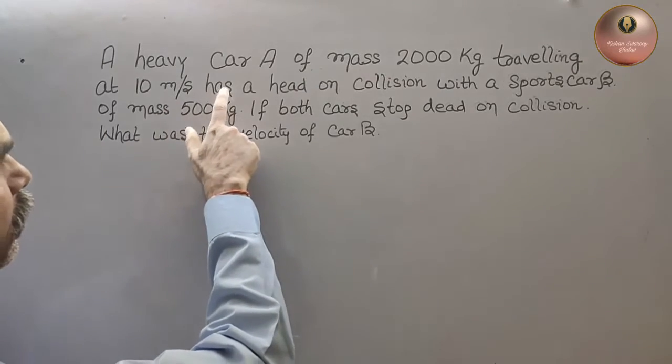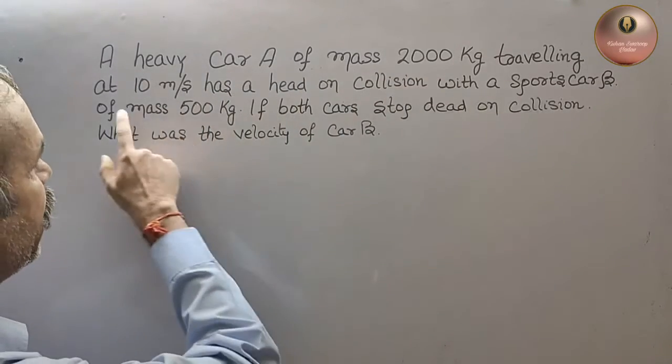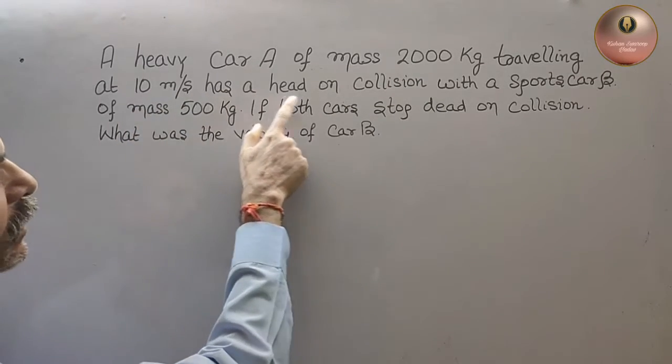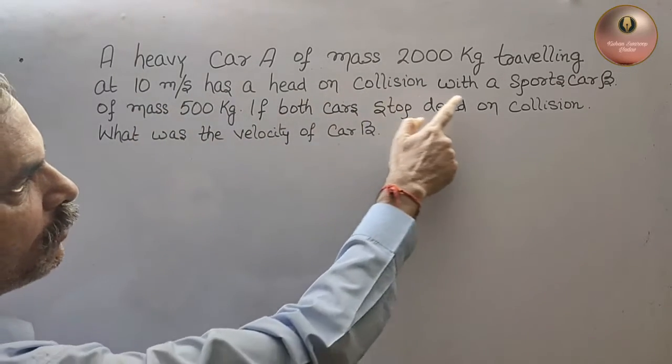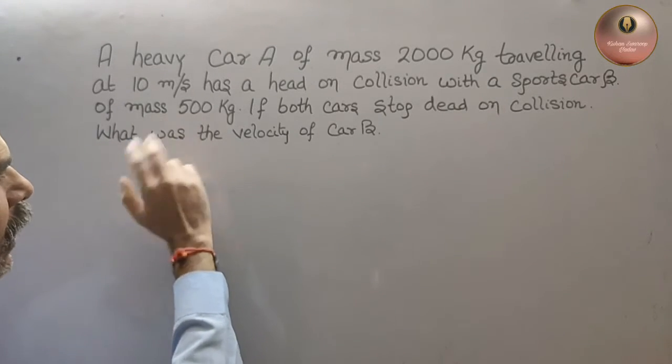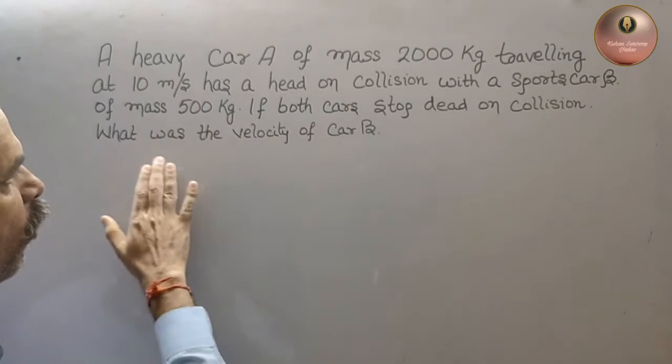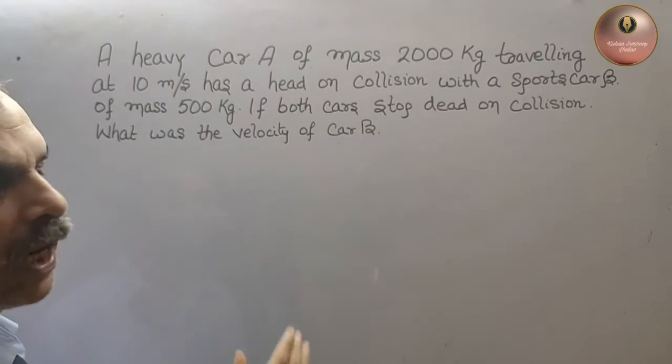A heavy car A of mass 2000 kg traveling at 10 meters per second has a head-on collision with a sports car B of mass 500 kg. If both cars stop dead on collision, what was the velocity of car B?